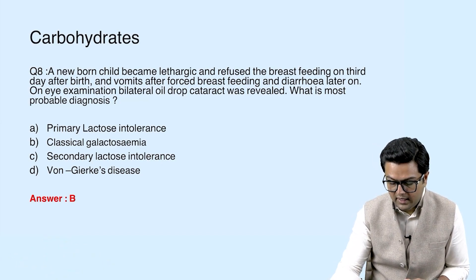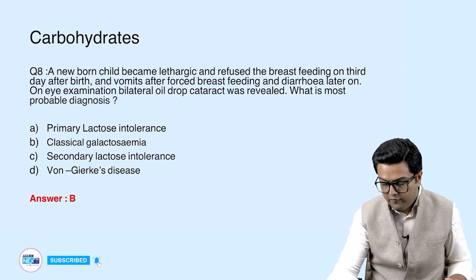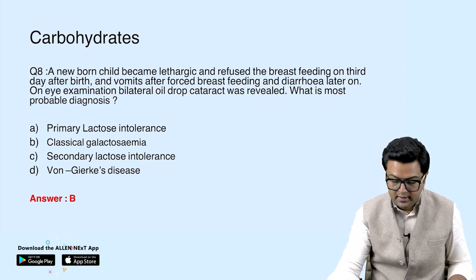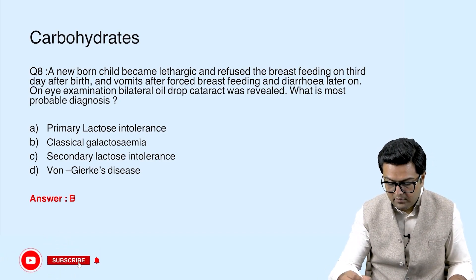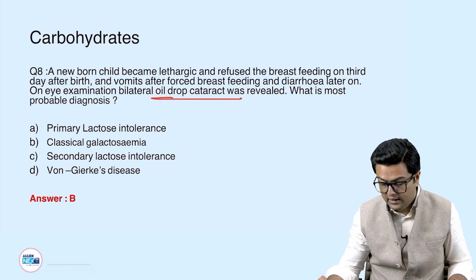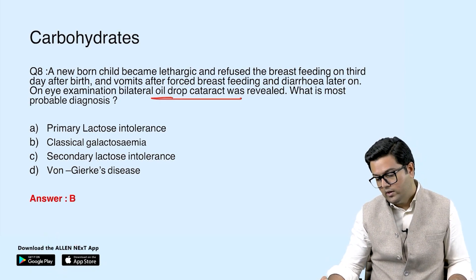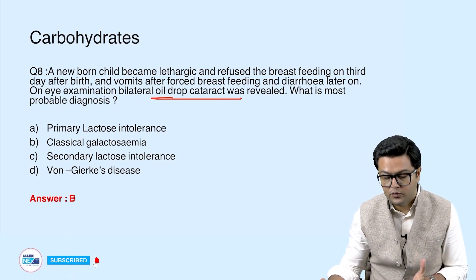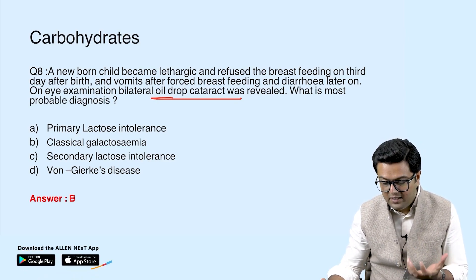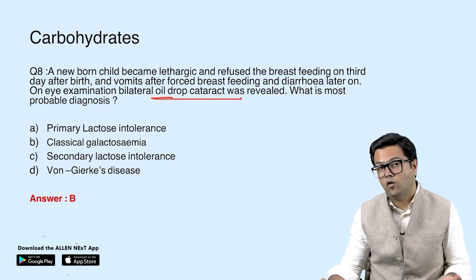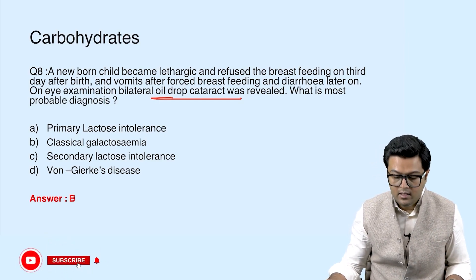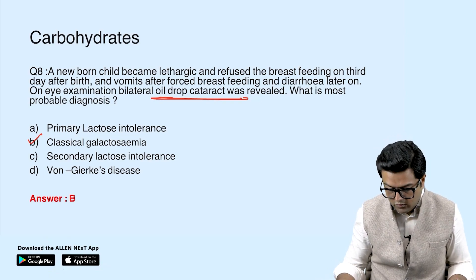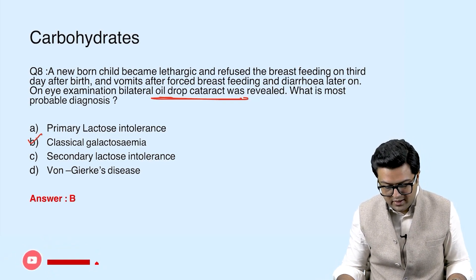Next question: A newborn became lethargic and refused breastfeeding on day three, with vomiting after forced breastfeeding and diarrhea. Examination showed bilateral oil-drop cataract. The key features pointing to classical galactosemia are milk intolerance (refusal of breastfeeding with vomiting) and oil-drop cataract.